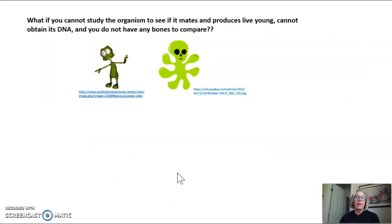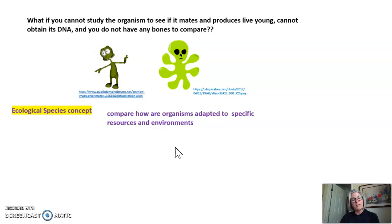What if you can't study the organism to see if it mates and produces live offspring? You can't obtain DNA, and you don't have any bones to compare. Then you use what's called the ecological species concept. In that concept, you compare how organisms are adapted to a specific environment and how they use the resources. When do we use this definition?